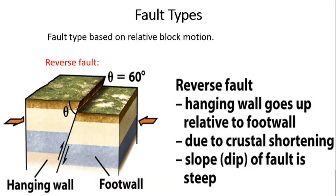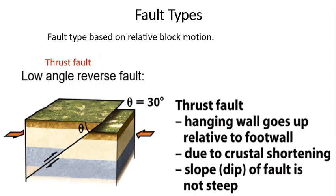In a reverse fault, the foot wall stands still and the hanging wall moves in the opposite direction. If the angle is approximately 60 degrees, it is classified as a reverse fault. If the angle is approximately 30 degrees, it is called a thrust fault, which is also classified as a low-angle reverse fault.